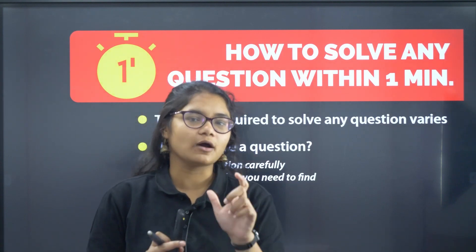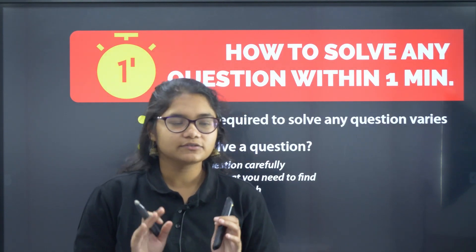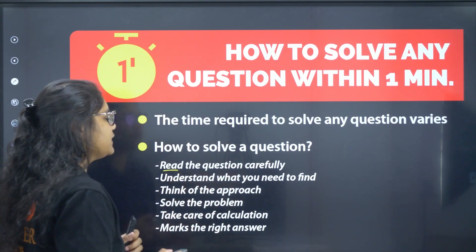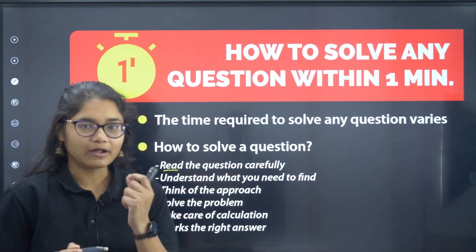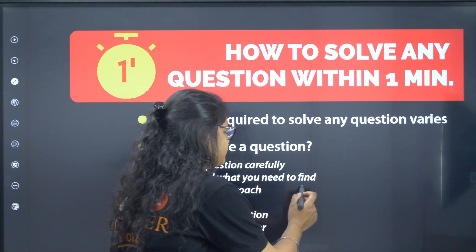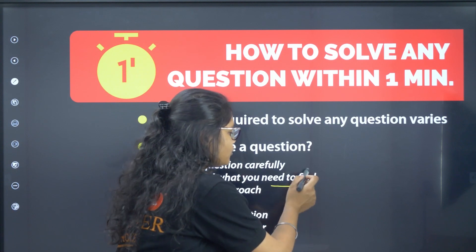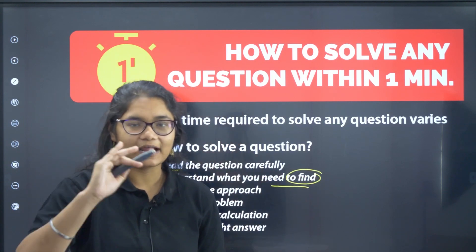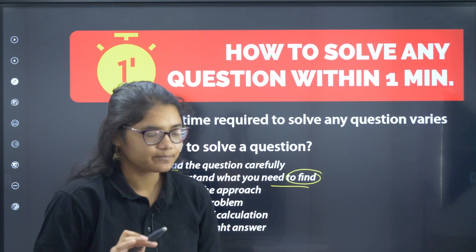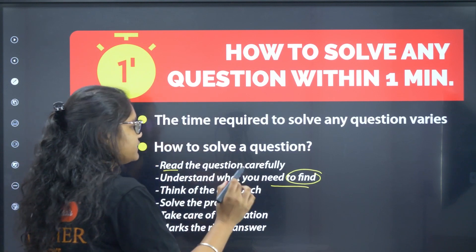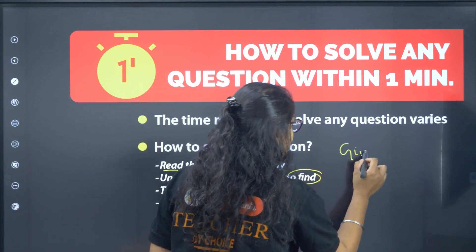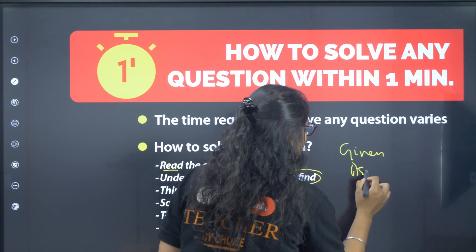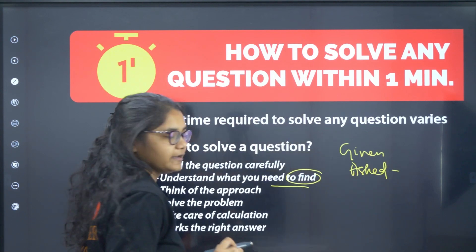Now, what is the basic approach to solving a question? First, you should read the question carefully. After that, you have to understand what you need to find. Note down the given data and find out what is asked — what is given and what is asked, these two things must be clear.